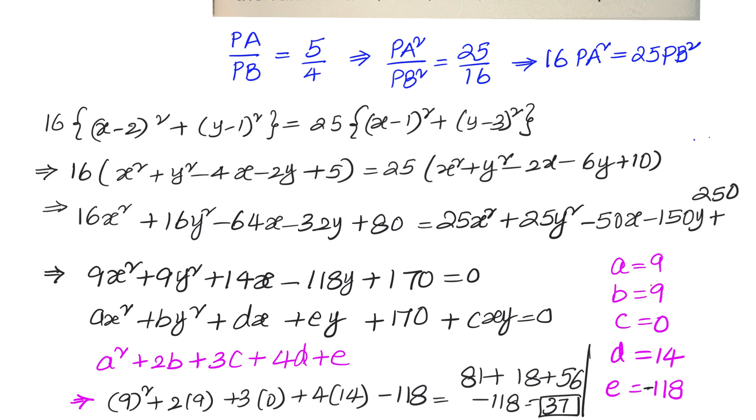What concept did we use? The distance formula, given in a ratio PA/PB = 5/4. We squared to get 16PA² = 25PB². Taking P as (x,y), we calculated the locus equation and compared it to the given form to find a, b, c, d, e, then substituted to get 37.